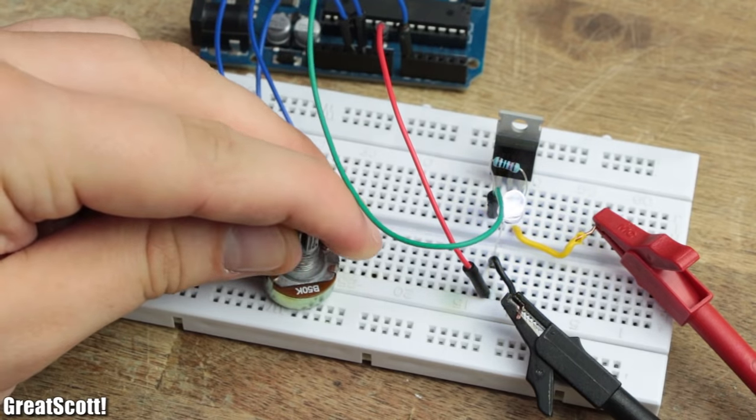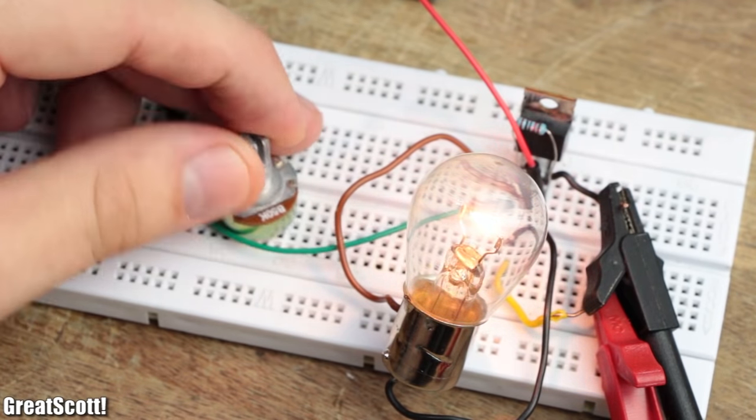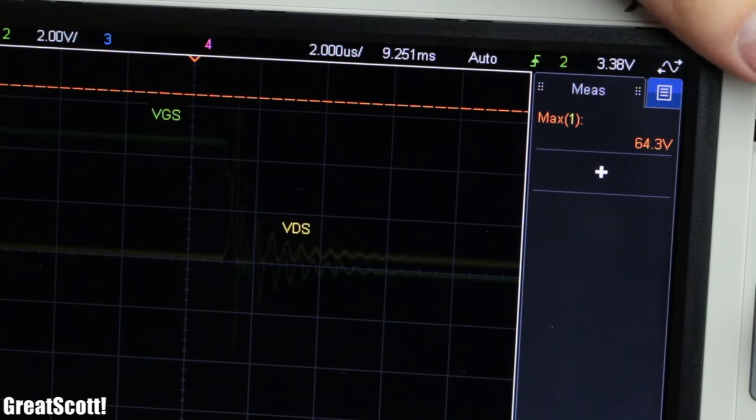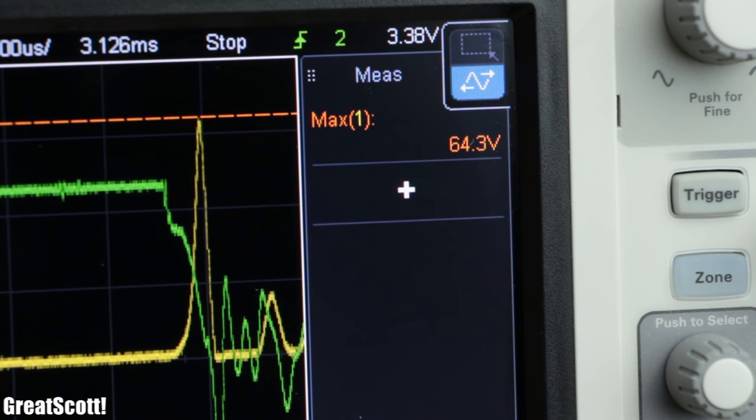Everything still seems to work just fine, but when we have a look at the oscilloscope we can observe a damped oscillation that reaches peaks of around 64V when the MOSFET switches off. And I don't think it will like that for very long.